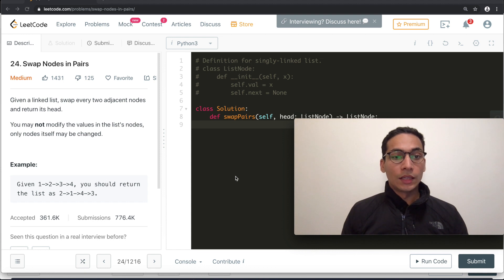the values in the list nodes. Only nodes itself may be changed. So we are given with an example: one, two, three, four. You should return two and one, four and three, so we are swapping two and one and three and four. So it's a very easy question, just few lines of code. We will first do it on